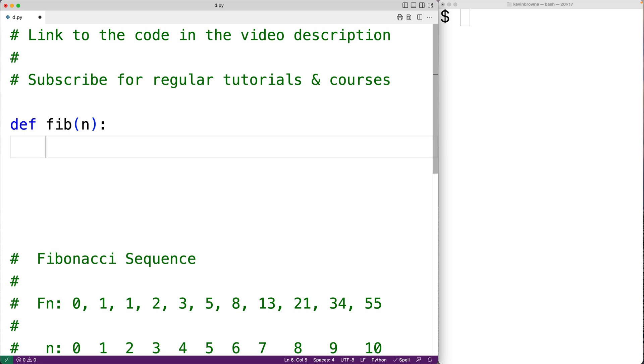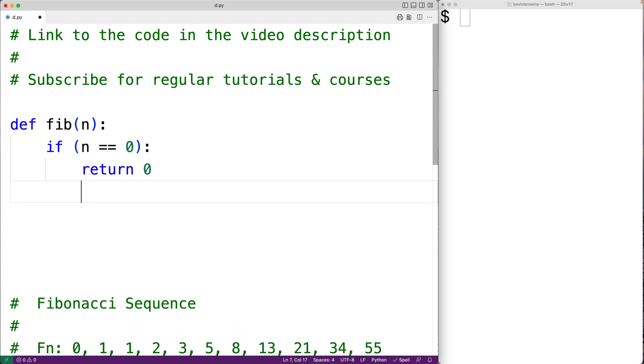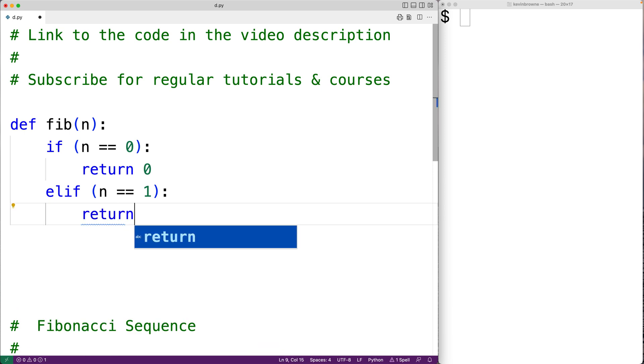Now we have our two special initial terms where term 0 we know is 0 and term 1 we know is 1. So first, we'll take care of those special cases. We'll have here if n is equal to 0, then we're just going to return 0. Else if n is equal to 1, then we're just going to return 1.